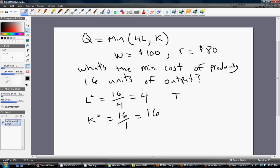The total cost of doing this, TC, is just going to be the price of labor, the wage, times the number of workers, 100 times 4, plus the price of capital times the number of units of capital, 80 times 16. And this gives us a value of $1,680. That is the least cost way of producing 16 units of output. Okay, I hope you found this video helpful.